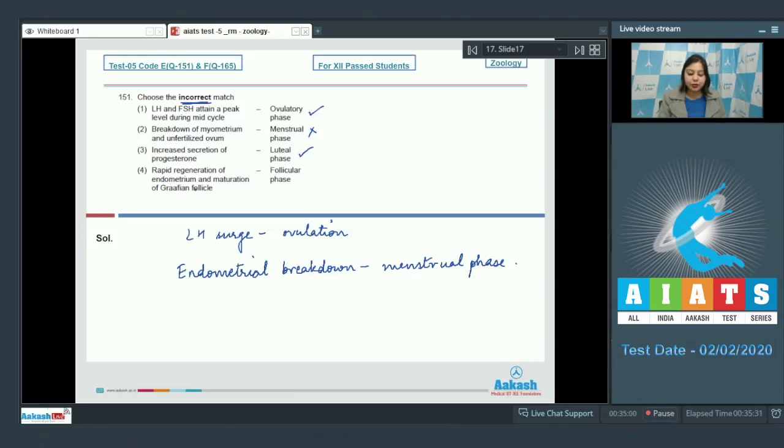Number 4. Rapid regeneration of endometrium and maturation of Graafian follicle occurs during follicular phase. This is also correct. So the incorrect match is option number 2.